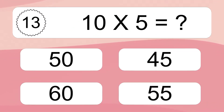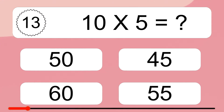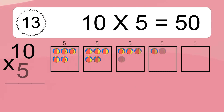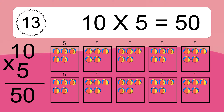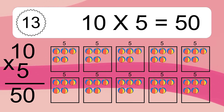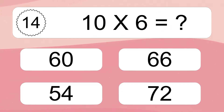Ten times five equals what? Ten times five equals 50. We have 10 boxes, and each box has five colorful balls inside. If you count all the balls in all the boxes together, you will have ten times five balls. This equals 50 balls.